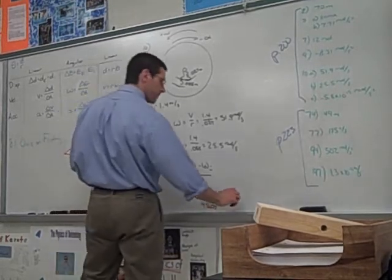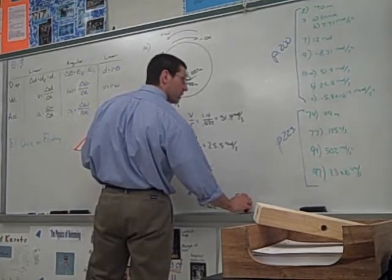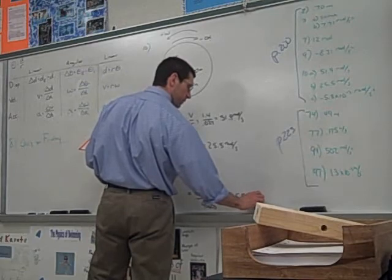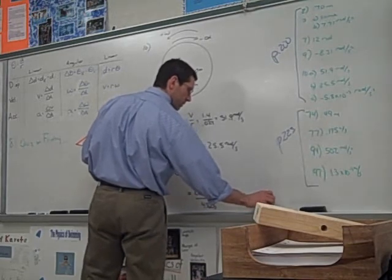And so, you solve that and you've got negative 5.8 times 10 to the minus 3 radians per second squared.